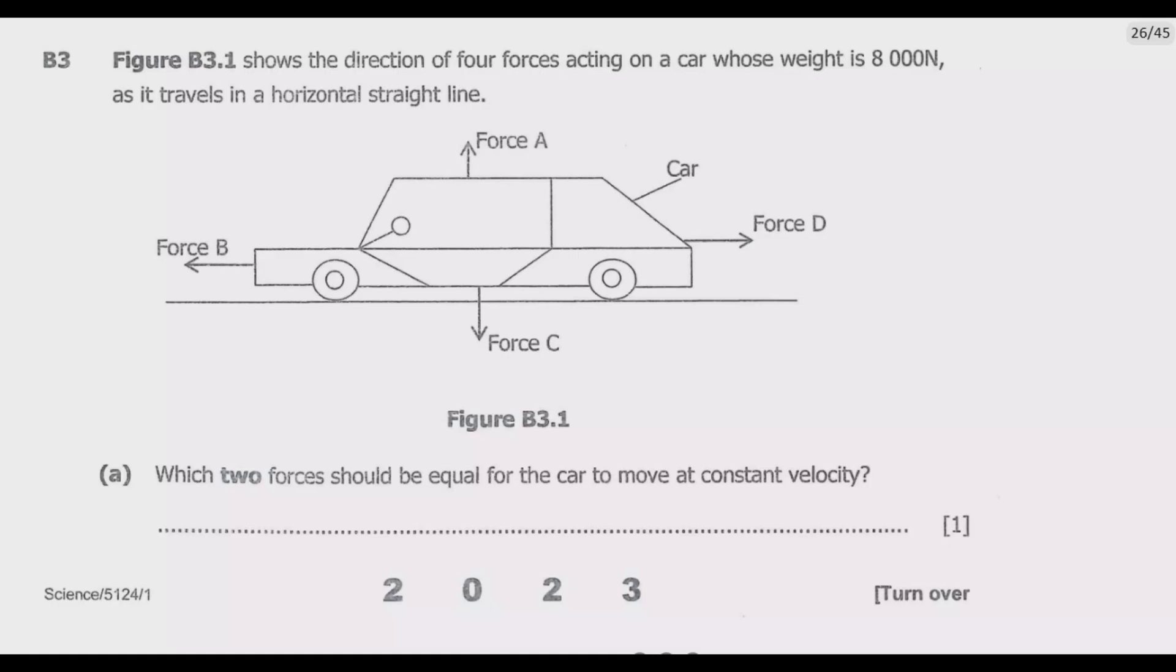Question B3: Figure B3.1 shows the direction of four forces acting on a car whose weight is 8000 newtons as it travels in a horizontal straight line. We have this figure, then question A asks which two forces should be equal for the car to move at a constant velocity.